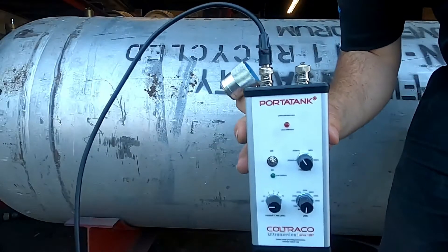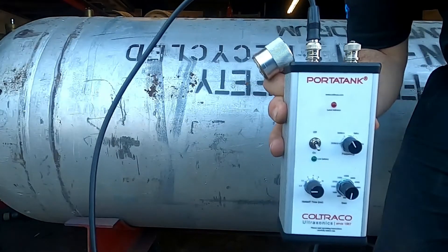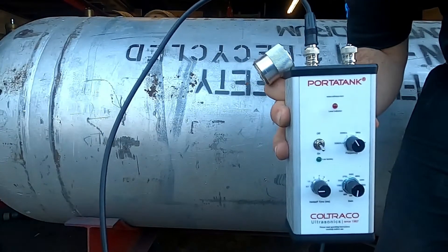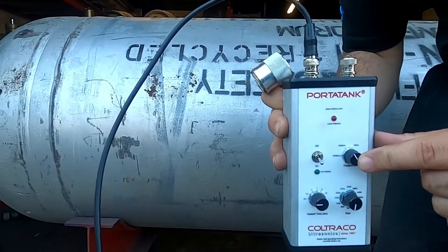Now to get started. For our first step, we're going to turn the Porta Tank on and then adjust our frequency knob in accordance to this one-ton cylinder, which would be 500 kilohertz.